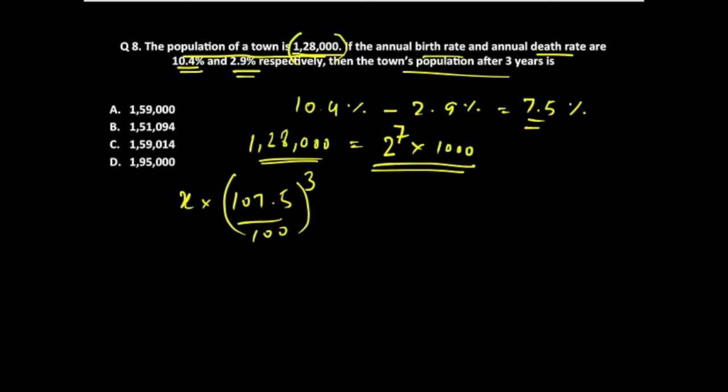This calculation is going to be a little tiresome for us, so we'll try to simplify this particular number as well. We know that 2.5% can be written as 1 by 40 of a value. That gives us 7.5% to be 3 upon 40.